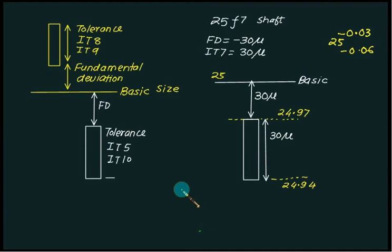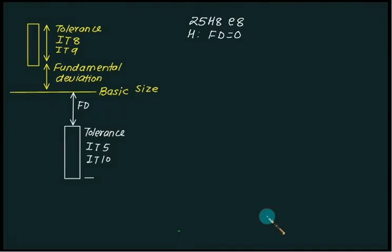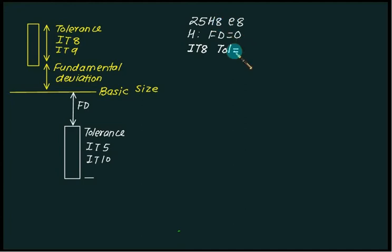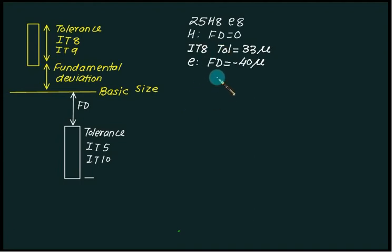Let's consider another example: 25 H8 E8. So 25 is the basic size. H is for the hole fundamental deviation, and E is the fundamental deviation for the shaft. For capital H the fundamental deviation is always 0. The IT8 tolerance for the hole is 33 microns, and the fundamental deviation for E is minus 40 microns. First, draw a horizontal line representing the basic size of 25 mm.